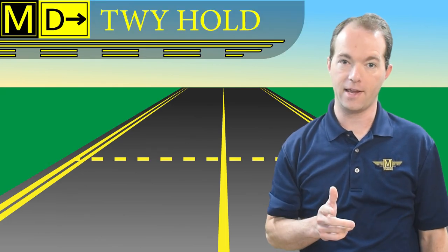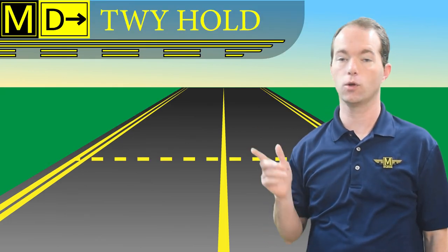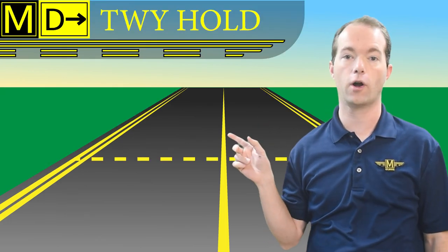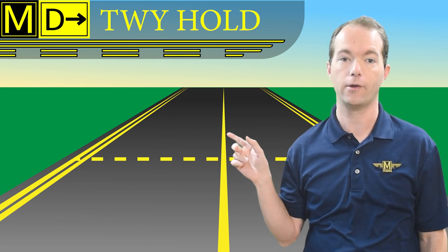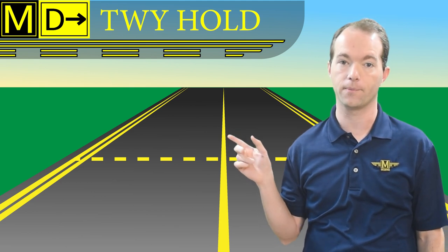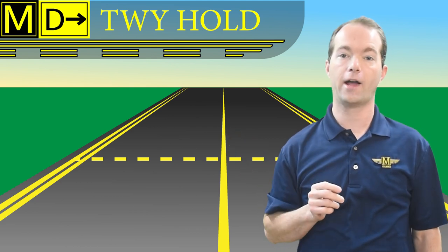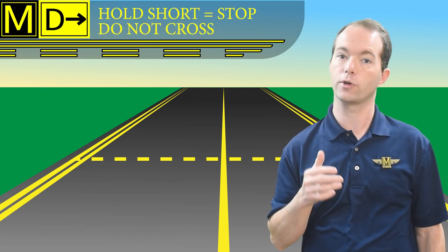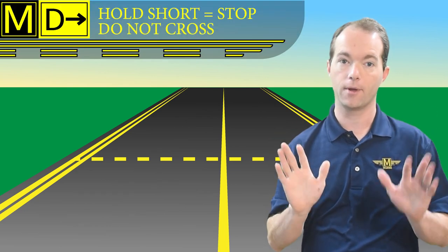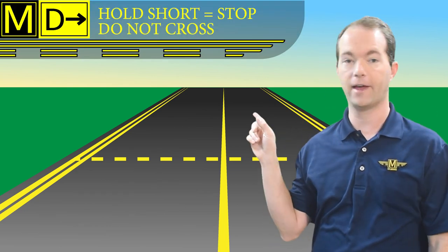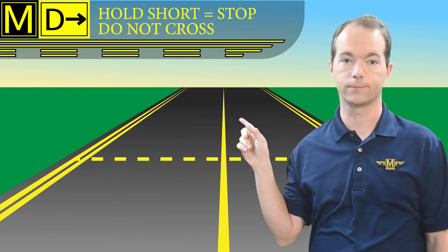You might see dashed yellow lines running across the taxiway on your journey to the runway. These are taxiway holding lines. If ATC instructs you to hold short, which means stop, then don't cross that yellow line.